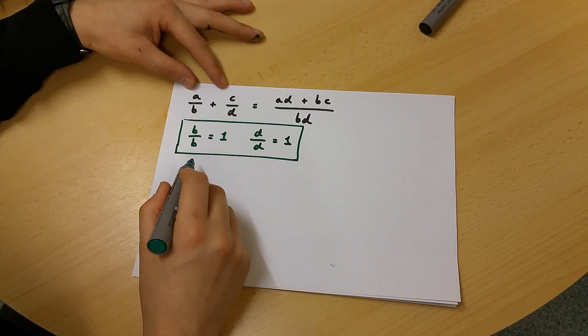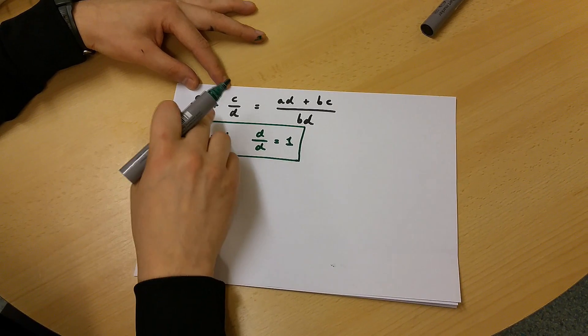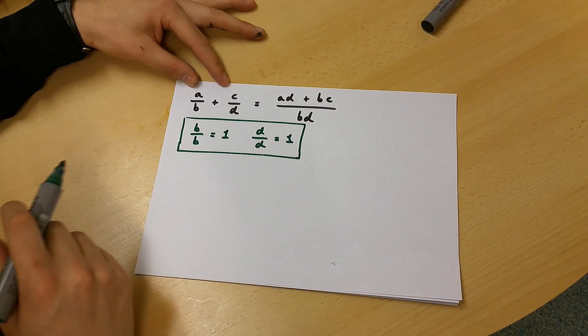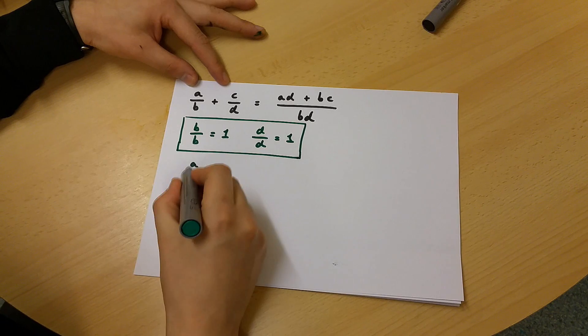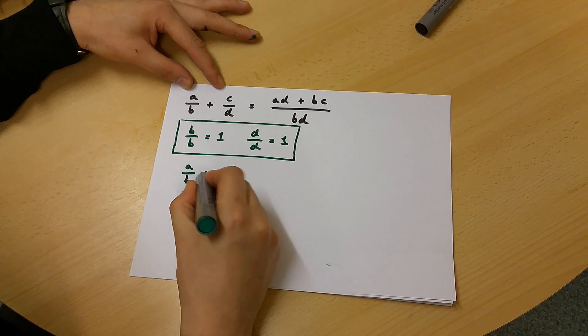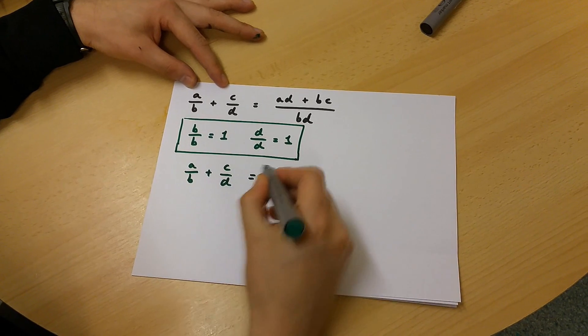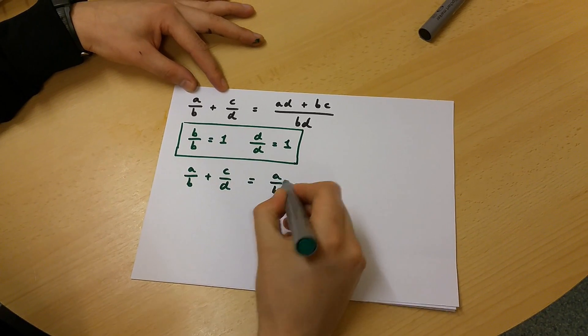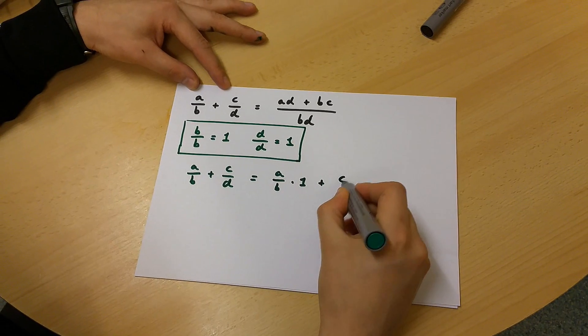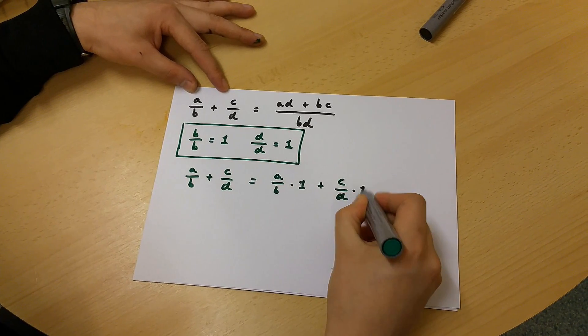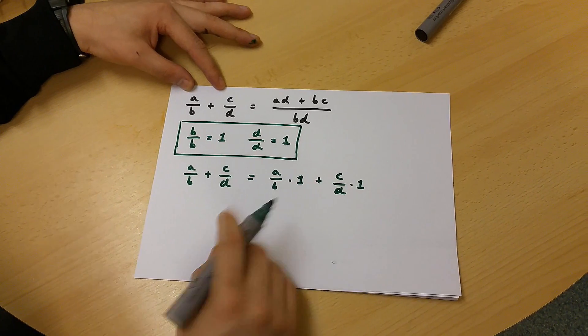Now let's begin proving why this is equal to this. So A/B plus C/D is in fact A/B times 1 plus C/D times 1.